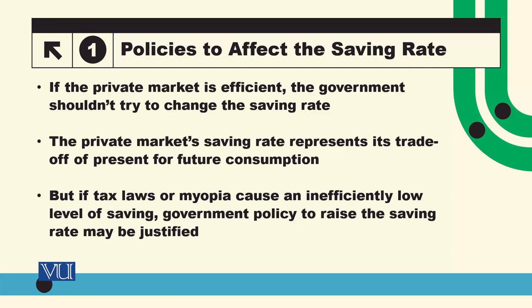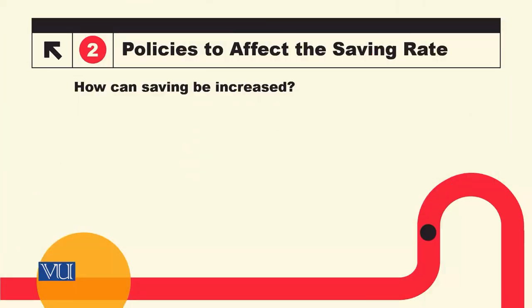Sometimes people are not far-sighted; they are short-sighted. In that situation, the government finds that people are not saving properly, and their spending behavior affects long-run outcomes. So the government intervenes with policies to improve the saving rate.